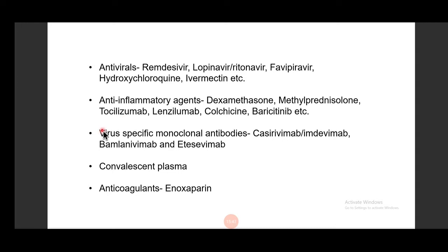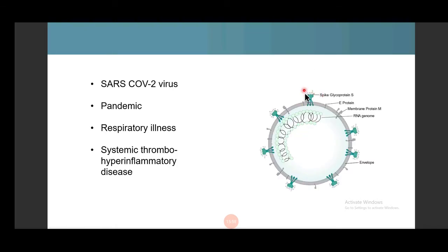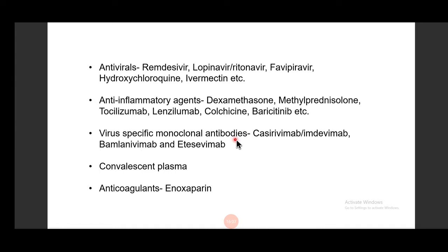A very recent advance is virus-specific monoclonal antibodies developed especially against the spike protein, which helps the virus with cell entry. Cocktail formulations are also available. These are used in mild cases, where viral replication is happening. Once the case becomes moderate to severe — beyond about 10 days after onset of symptoms — there is much less viral replication; the disease is driven by hyperinflammation and thrombosis. So there is no use of antivirals or virus-specific monoclonal antibodies at that stage. These agents should be used in the early phase only.